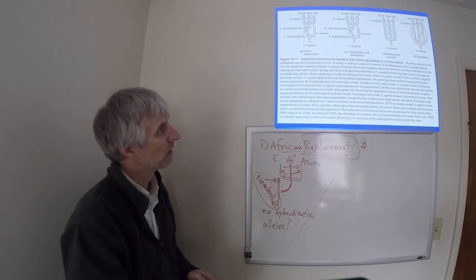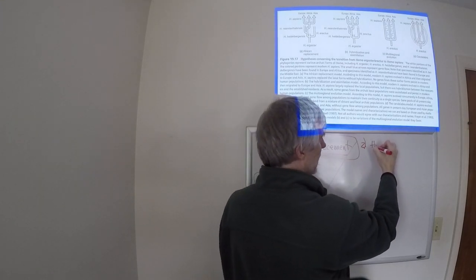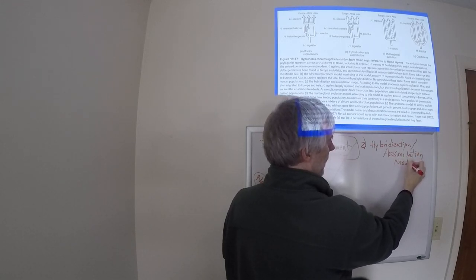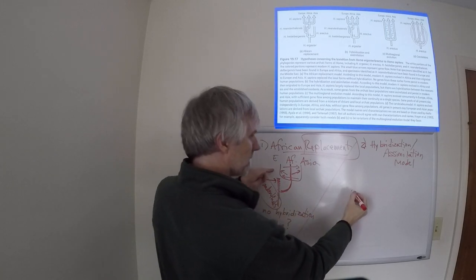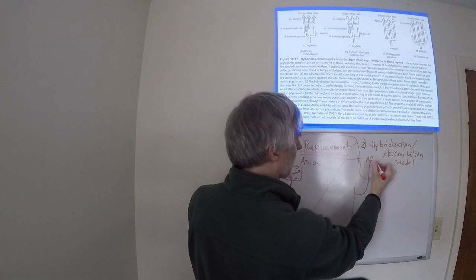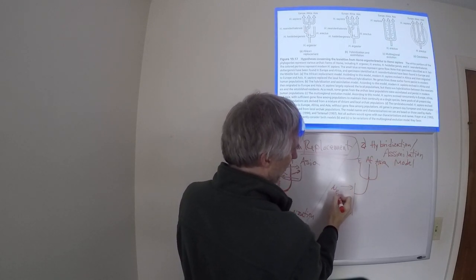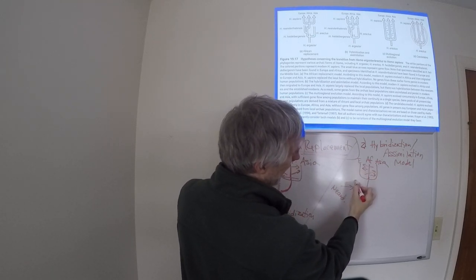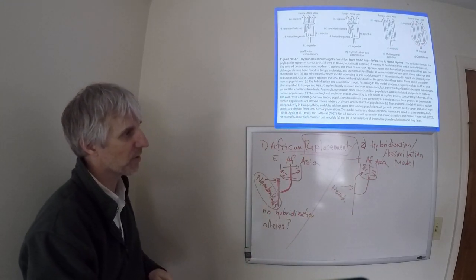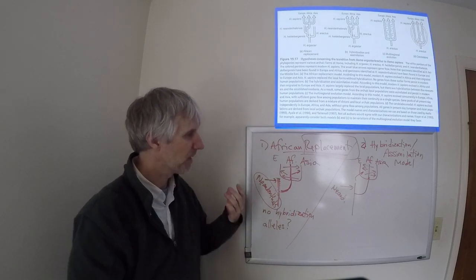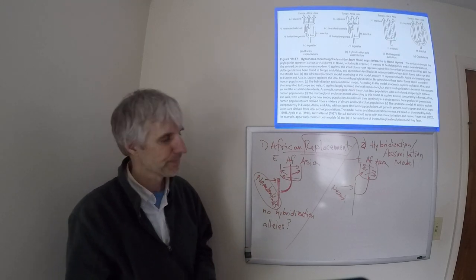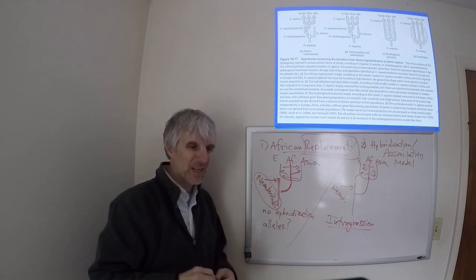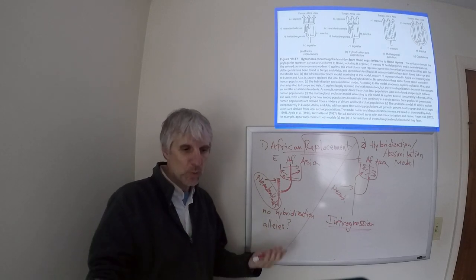Model number two is called the hybridization and assimilation. In this model, the tree looks exactly the same with Africa, Europe, and Asia. And then here is the Neanderthal. But in this model, in addition to humans wandering all over the planet, you also get some Neanderthal DNA kind of mixing in with the modern-day Homo sapiens DNA. So in this model, the Neanderthals disappear from the planet through a process called introgression. In introgression, a species disappears because there aren't many of them and they do reproduce with another species.